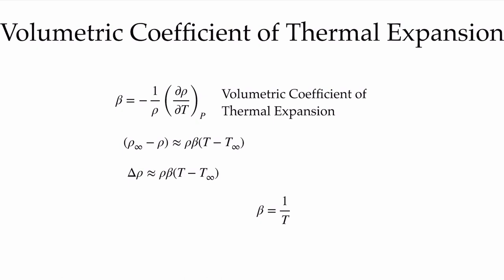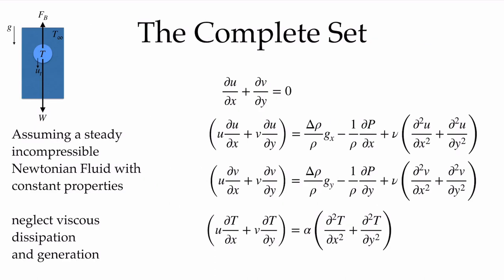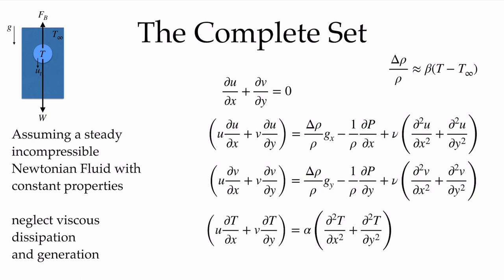For an ideal gas, we can simply evaluate beta as 1 over T, where we express T in absolute units. This is a thermodynamic definition, and we must use absolute units when we evaluate beta. If we don't have an ideal gas, this is a material property that we're going to have to look up. We can now replace our expression for delta rho over rho — it becomes beta times T minus T infinity — and substitute that in for both of these terms.